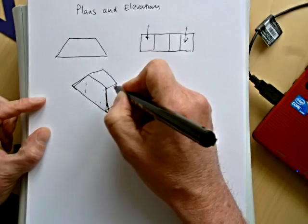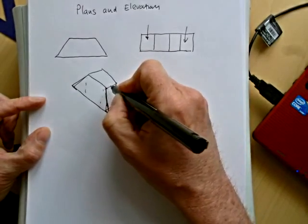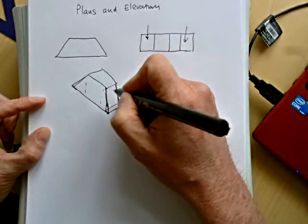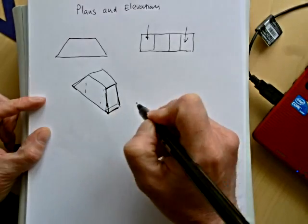Because when you look down, you're still going to see kind of like a rectangular shape. You won't see the slope, you'll just see the join there, and the join there.